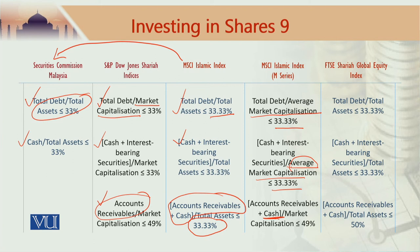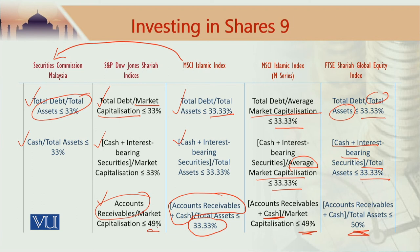The FTSE Sharia global equity index is a total assets denominated approach. Total debt divided by total assets should not exceed 33.33%, and accounts receivables plus cash divided by total assets should be less than or equal to 50%. This represents a slight variation compared to other methodologies — seemingly small but meaningful differences in the threshold levels of these ratios.